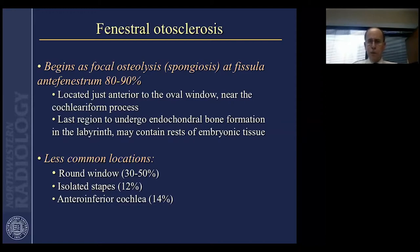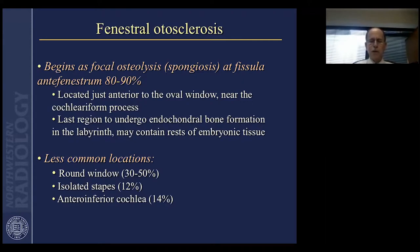Focal fenestral otosclerosis typically begins at the anterior superior margin of the cochlea near the middle ear, in an area of embryologic cartilage called the fistula antifenestrum. It's near the cochleariform process and is the last region to undergo endochondral bone formation in the labyrinth, meaning persistent embryonic tissue is often the site where otosclerosis begins. If it does not begin at the fistula, it may begin at the round window niche or may be isolated in the ossicles, such as the stapes.